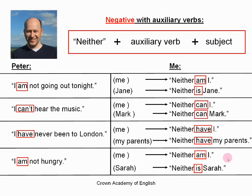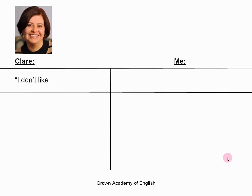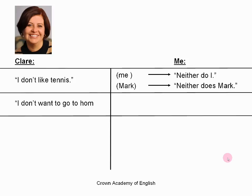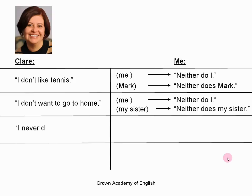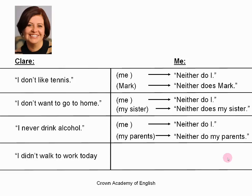Now the last rule — number four. Here is Claire. 'I don't like tennis.' 'Neither do I.' 'Neither does Mark.' 'I don't want to go home.' 'Neither do I.' 'Neither does my sister.' 'I never drink alcohol.' 'Neither do I.' 'And neither do my parents.' 'I didn't walk to work today.' 'Neither did I.' 'And neither did Mark.'